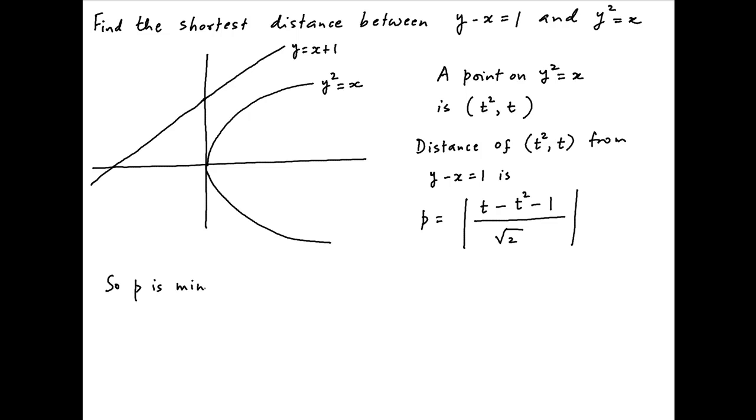Now the distance P is minimized or maximized when the derivative of P with respect to t equals 0. It therefore follows that the absolute value of 1 minus 2t should equal 0, which implies that t equals one-half.